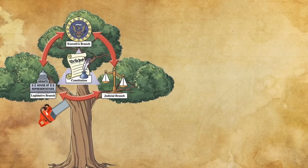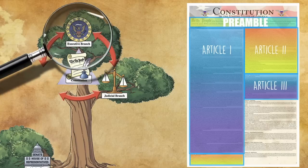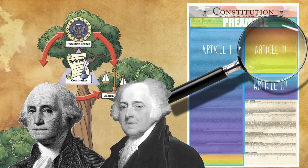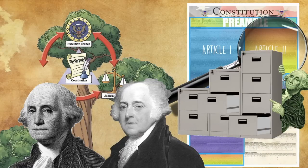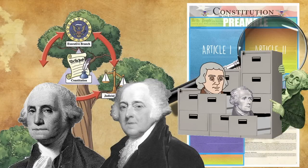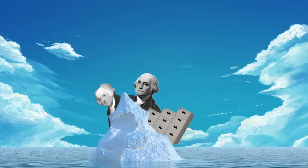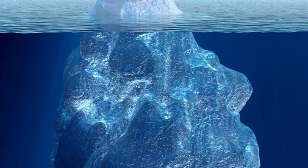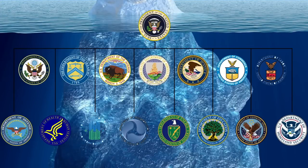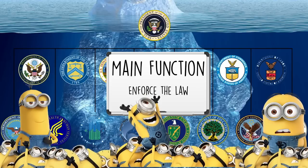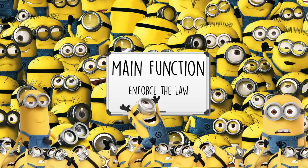We're done with the legislative branch. Let's move on to Article 2 of the Constitution, which talks about the executive branch. The executive branch includes the president, the vice president, and the presidential cabinet, which includes the executive departments — it's not an actual piece of furniture full of advisors. Believe it or not, the executive branch is actually the largest branch in the federal government. It's not just two people and a group of advisors. Deep beneath the surface are 15 executive departments filled with millions of employees. The main function of the executive branch is to enforce the law, and these millions of employees help the president do just that.